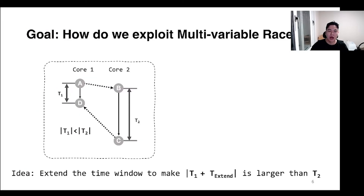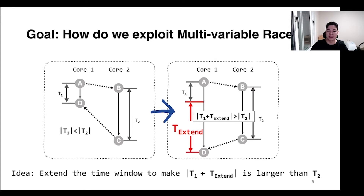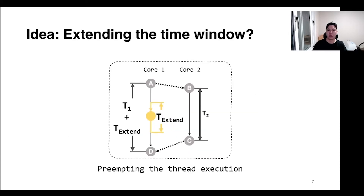So how to exploit this case of race condition? We thought that if we could extend T1 and make it bigger than T2 in some way, it can be exploited with brute force. Then, how to extend the time window? We thought that we should preempt the thread execution by having another task run between instruction A and instruction B.